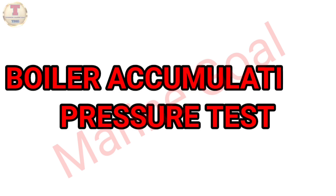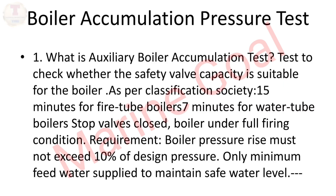Boiler accumulation pressure test. What is the auxiliary boiler accumulation test? It is a test to check whether the safety valve capacity is suitable for the boiler. As per classification society requirements: 15 minutes for fire tube boilers, 7 minutes for water tube boilers.